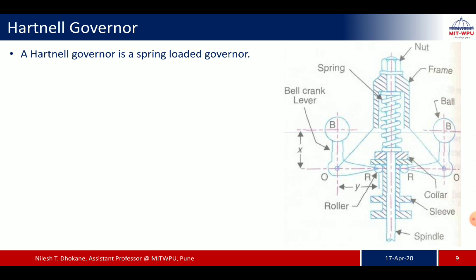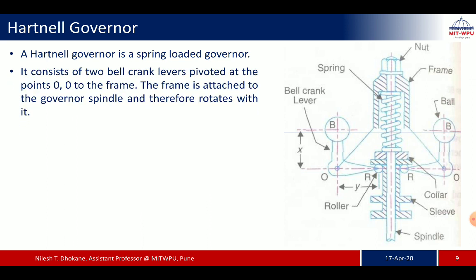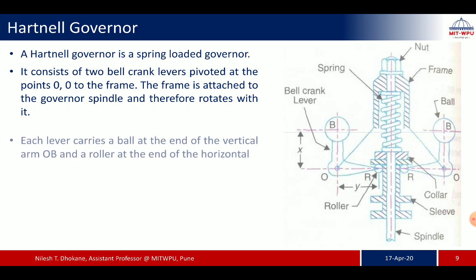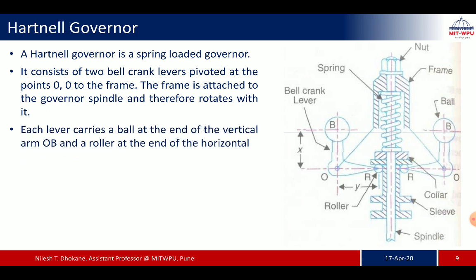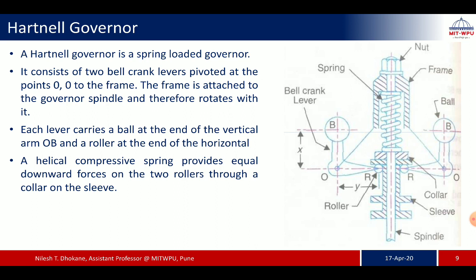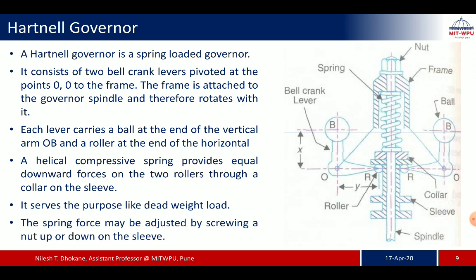The Hartnell governor is a spring loaded type. It consists of two bell crank levers pivoted at points O to the frame, which rotates with the governor spindle. Each lever carries a ball at the end of the vertical arm OB and a roller at the end of the horizontal arm. A helical compressive spring provides equal downward force on the two rollers through a collar on the sleeve, serving a similar purpose to dead weight loading. The spring force may be adjusted by screwing a nut up or down on the sleeve.